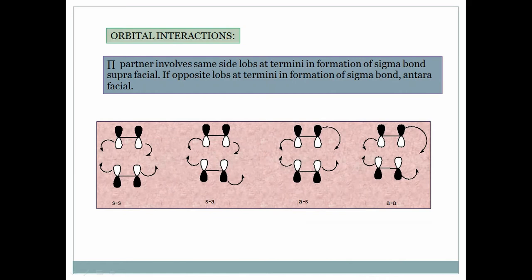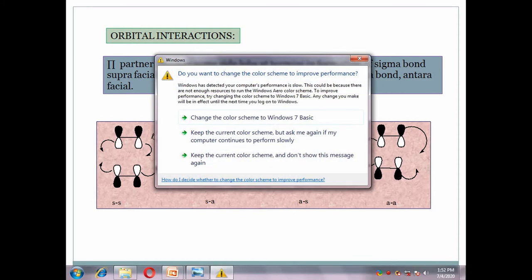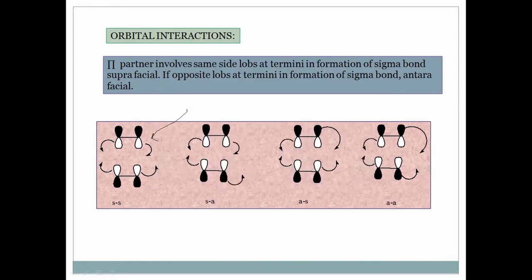The same concept is explained using orbital lobes. In supra-supra cycloaddition, in the first ethylene both the left and right sides use the white lobe — same face, so this is supra. The other component also uses the white lobe on both sides from the bottom — same face — so that is also supra. For supra-antara, the supra partner uses the white lobe on the bottom for both termini, but the antara partner uses the white lobe on the top face for one terminus and the bottom face for the other.